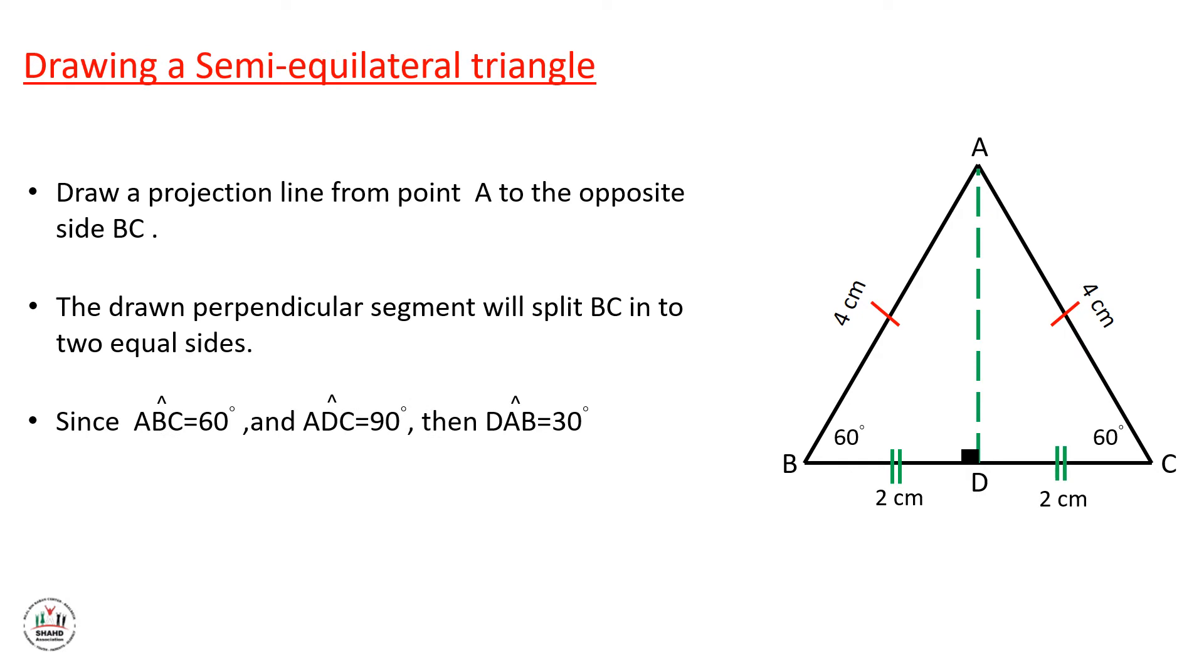And since angle ABC equals 60 degrees, and angle ADC equals 90 degrees, then angle DAB will be equal to 30 degrees. The sum of angles of a triangle equals 180 degrees.